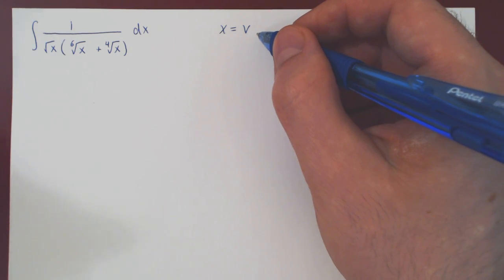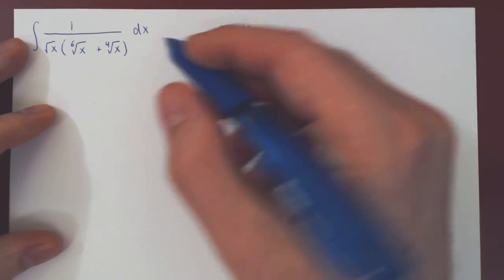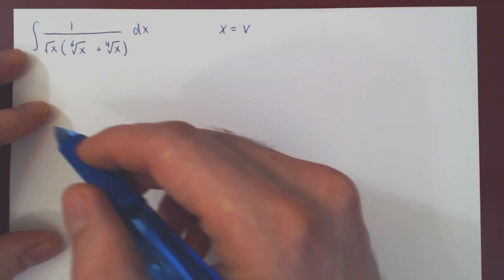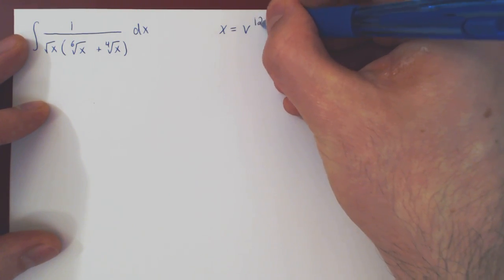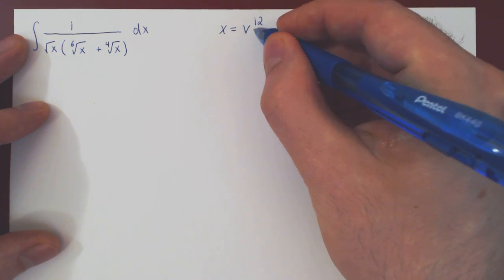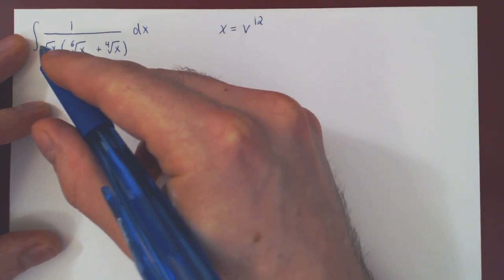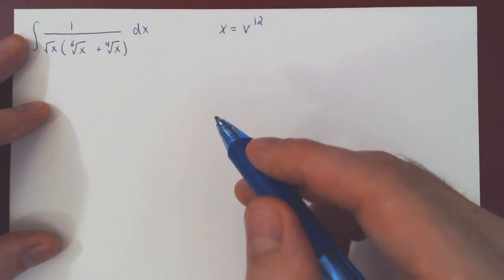But what you want is the least common multiple of 4, 6, and 2, and that is not 24 but 12. The smallest positive integer divisible by 4, 6, and 2 is 12 and not 24.